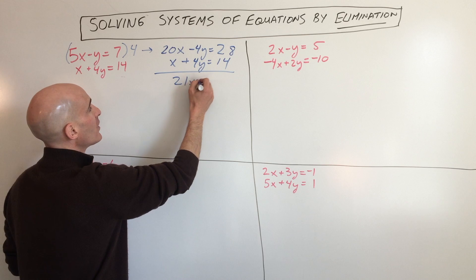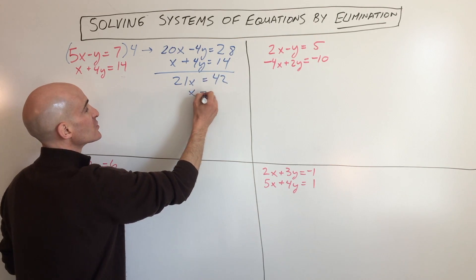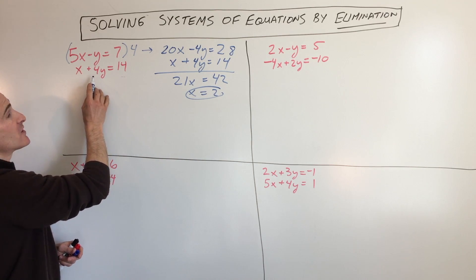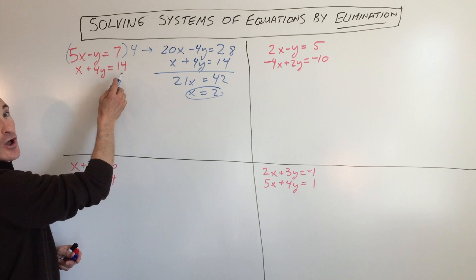So that gives you 21x equals 42, which means that x equals 2. If you put 2 back in, you can put it in for this equation or this equation, and you can solve for y.